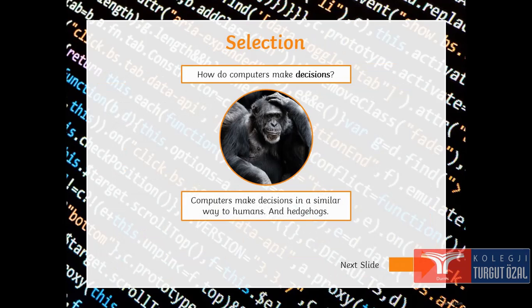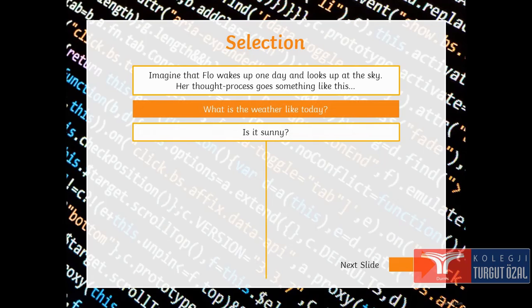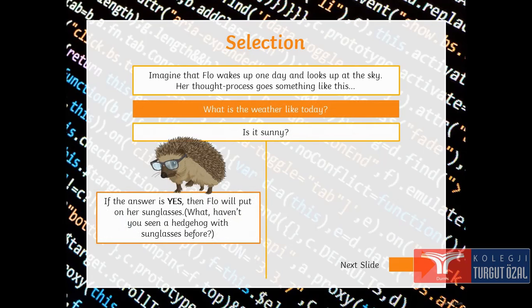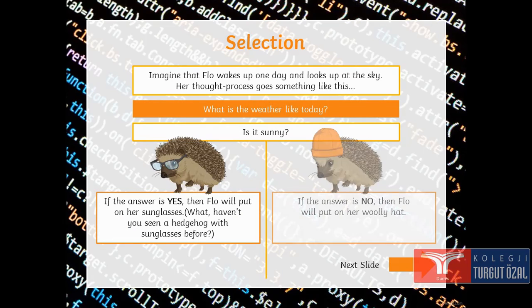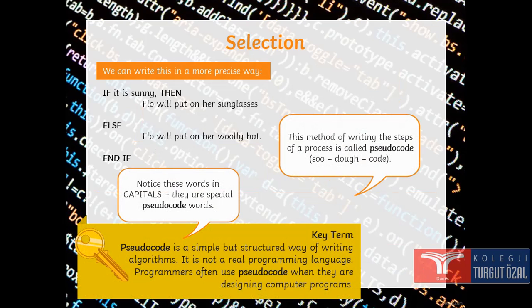Now, how do computers make decisions? Let's see this. Computers make decisions in a similar way to humans and hedgehogs. Let's see how this works. Imagine that Flow wakes up one day and looks up at the sky. Her thoughts process goes something like this. What is the weather like today? Is it sunny? If the answer is yes, then Flow will put her sunglasses. If the answer is no, then Flow will put her woolly hat. Let's see. We can write this in more precise way. If it is sunny, then Flow will put her sunglasses. Else Flow will put on her woolly hat. Now we have that. We don't have any other decision here to make.